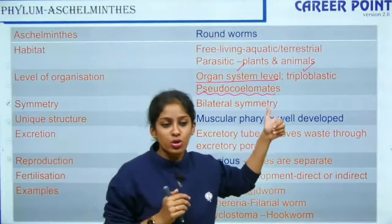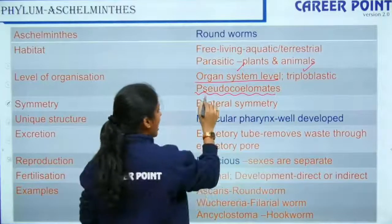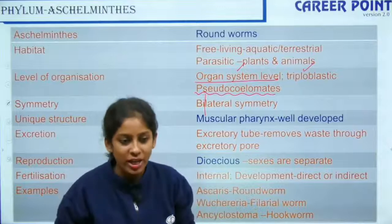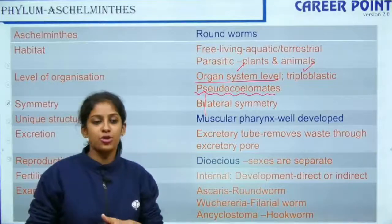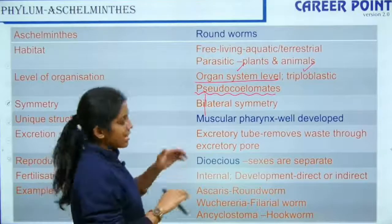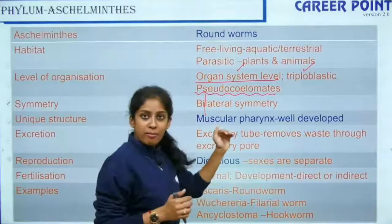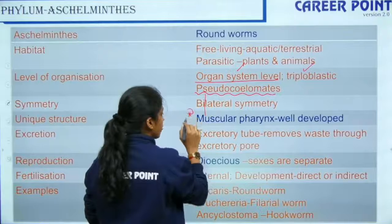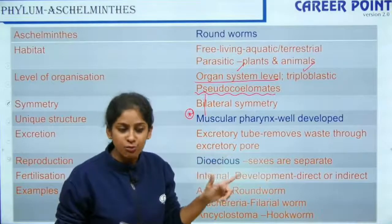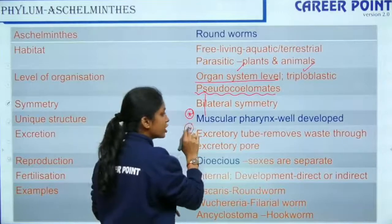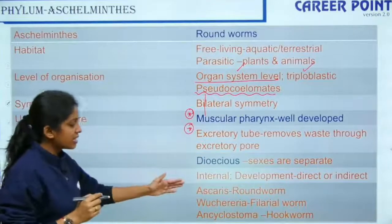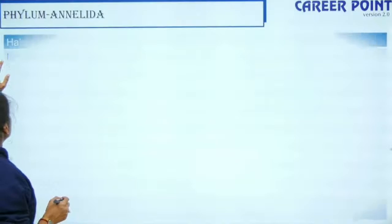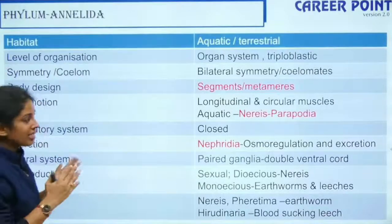Aschelminthes have bilateral symmetry — everything further will have bilateral symmetry. They have well-developed muscular pharynx, which is a unique feature. Just like Platyhelminthes had flame cells for excretion, Aschelminthes have excretory tubes. Examples are Ascaris, Wuchereria, and Ancylostoma.